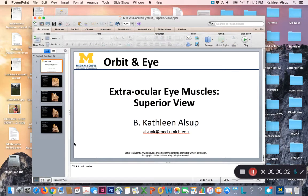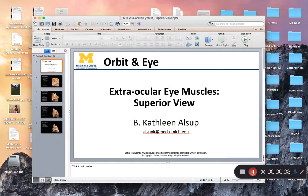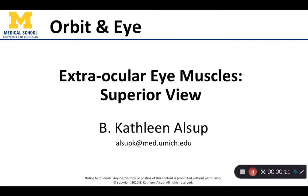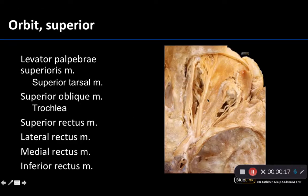Hello friends, let us talk about extraocular eye muscles and we're going to run through how it would look in terms of a dissection. We'll start with what you can see when you first remove the first portion of the frontal bone and then we'll start reflecting some of these muscles in order to see a clearer view of some of these other regions.